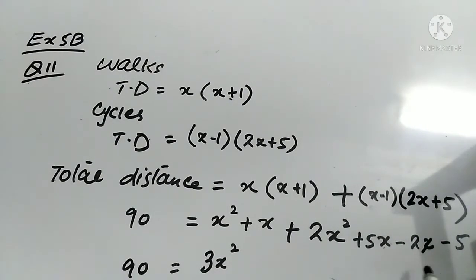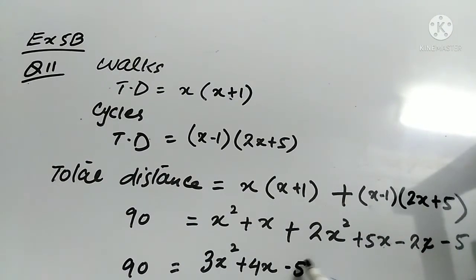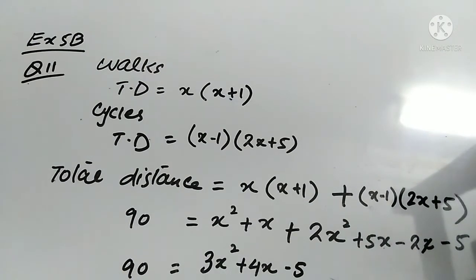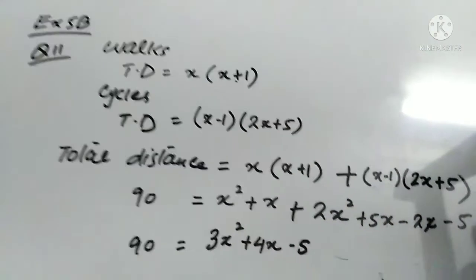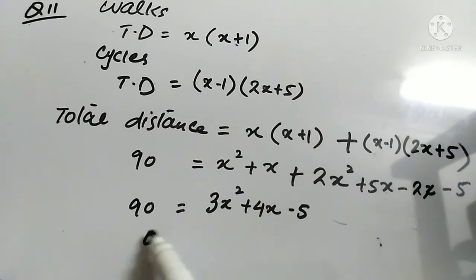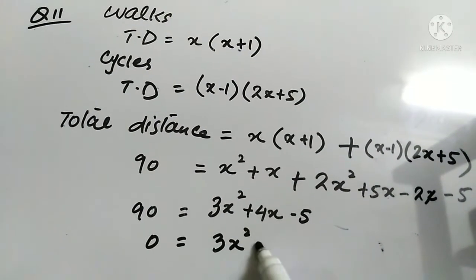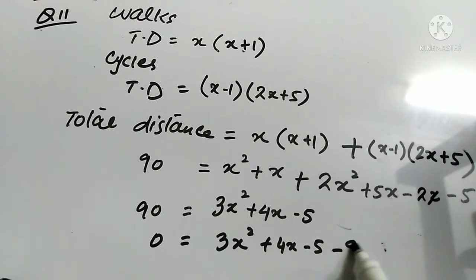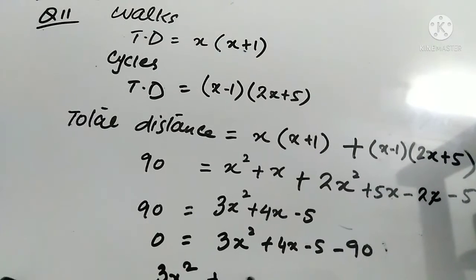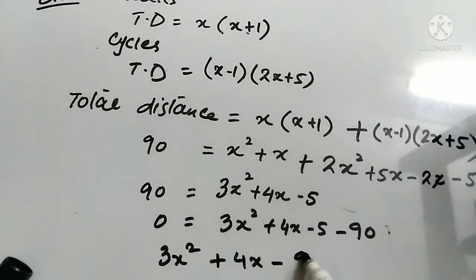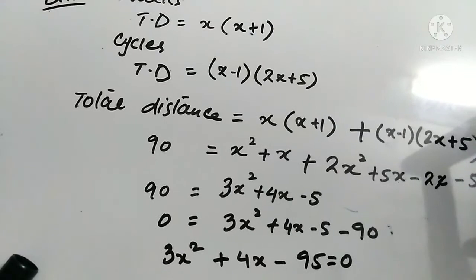Then x + 5x − 2x = 4x, and the only constant is −5. So: 90 = 3x² + 4x − 5. Since 90 is adding on the right, we move it to the left and subtract: 3x² + 4x − 5 − 90 = 0, which gives 3x² + 4x − 95 = 0. This is the equation we had to prove in Part 1.